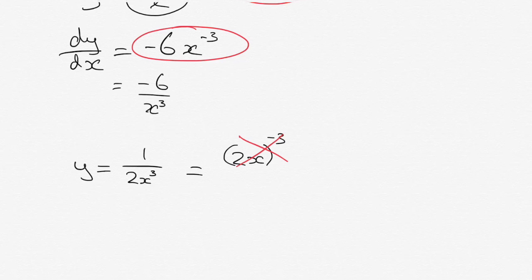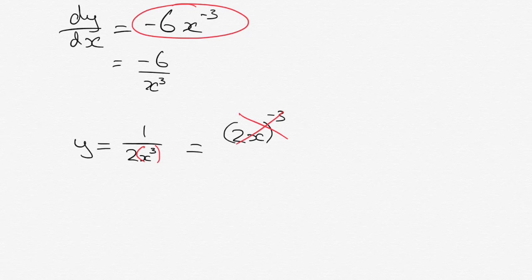That's not the right thing to do because what's getting raised to the power of three here is just the x. So we only actually have to bring our x up to the top, which means I'd turn this into x to the power of negative three over two, leaving the two down the bottom.